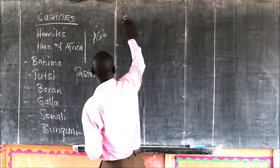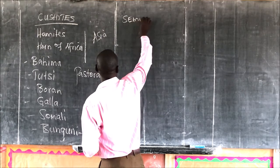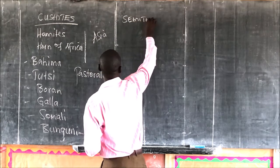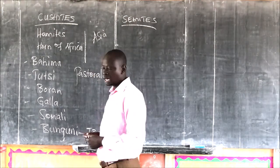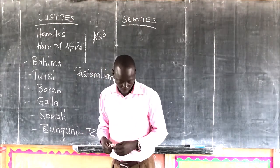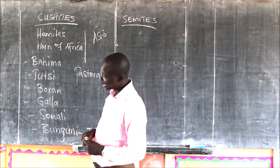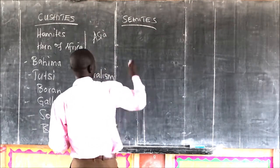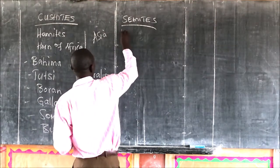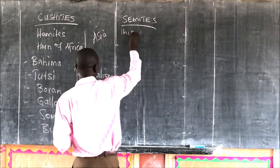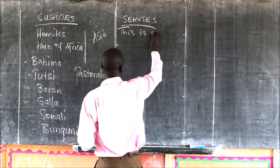Now let's also look at the Semites. We have another group and we say this group has mixed blood of the Arabs, Africans, and the Jews.